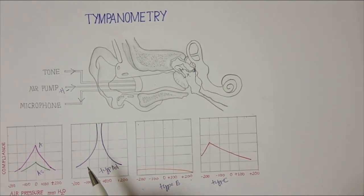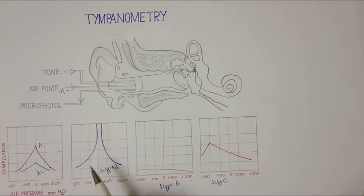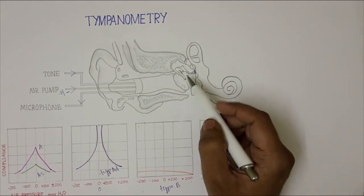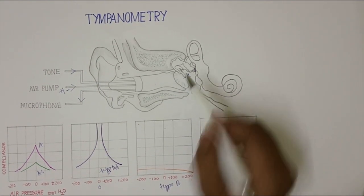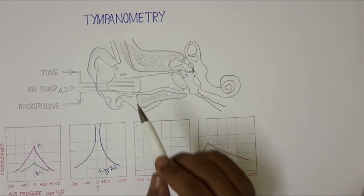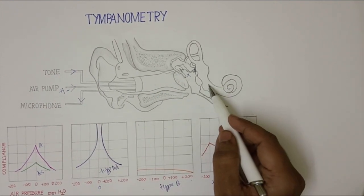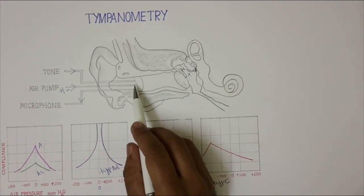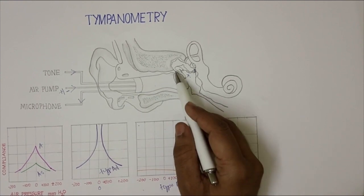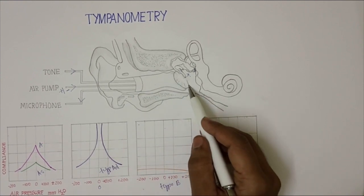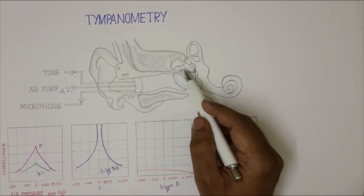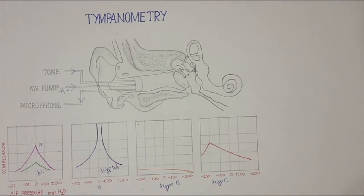So what is tympanometry? It is an objective test to find out middle ear pathology. This should be done when the sensorineural system is normal and on examination the tympanic membrane is intact. If you want to rule out pathology in the middle ear, you can go for tympanometry.